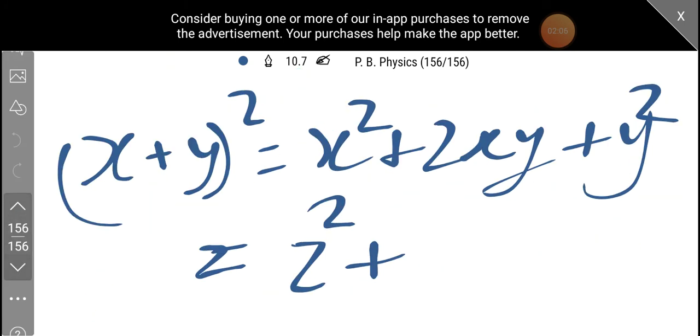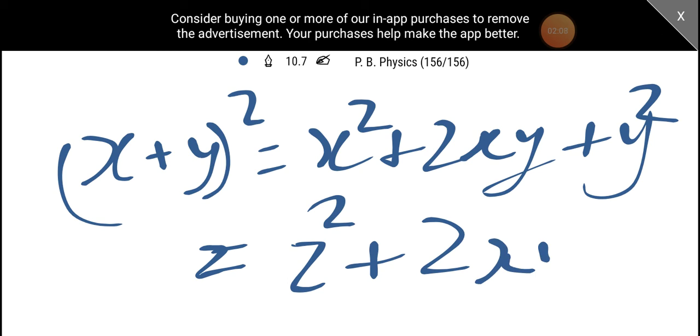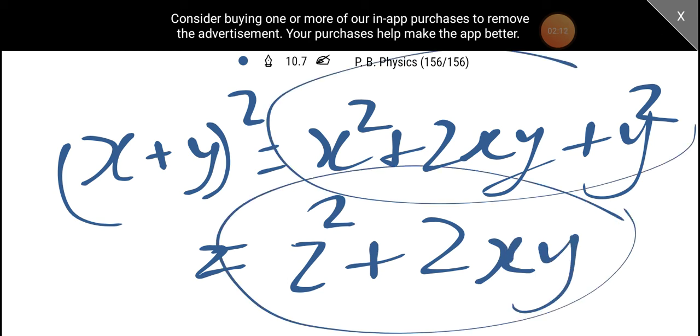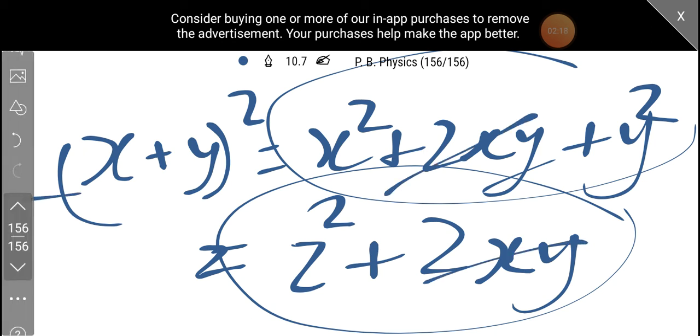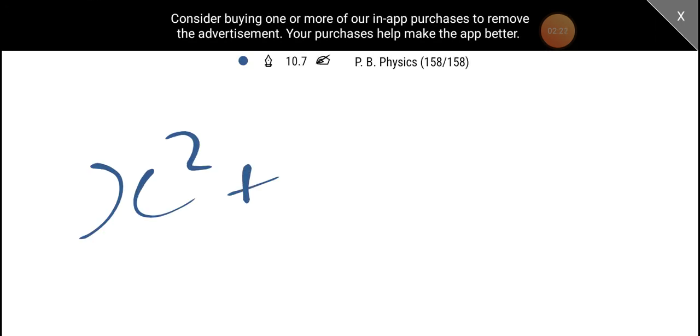z² plus 2xy, this is the same area. Now we have x² plus y² plus 2xy equals z² plus 2xy. Therefore, x² plus y² is equal to z².